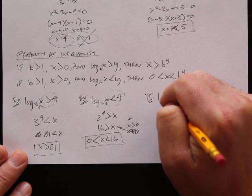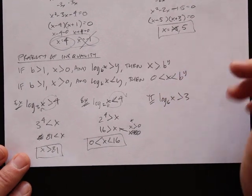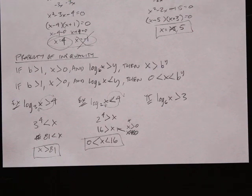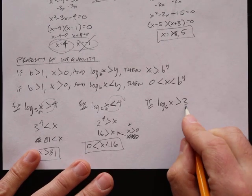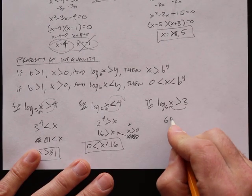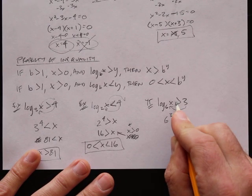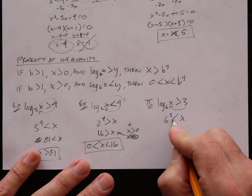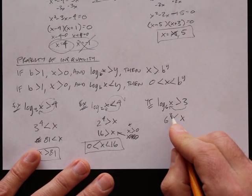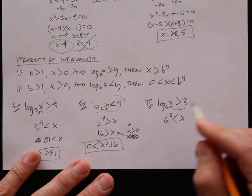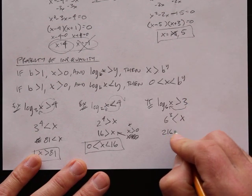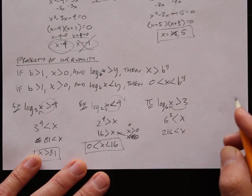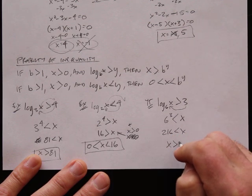You do one: log base 6 of x is greater than 3. 3 jams up in there, giving 6 to the third power, and x drops over keeping the greater than sign. 6 to the third is 36 times 6, which is 216. So 216 is less than x, or x is greater than 216.